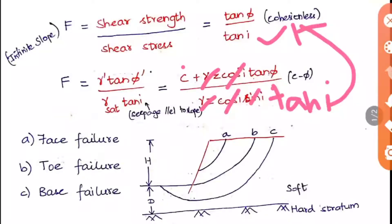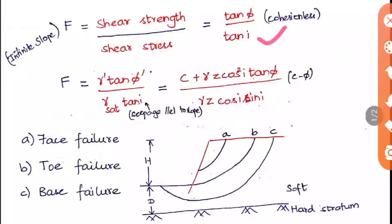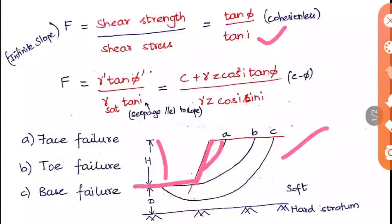For cohesionless soil you can directly write F = tan φ / tan i. Now for types of failure in a finite slope: if you consider a soil structure with a slope, there are three failure types. Face failure occurs above the ground level. Toe failure occurs at the ground level. Base failure occurs below the ground level, within the soft stratum above the hard stratum.